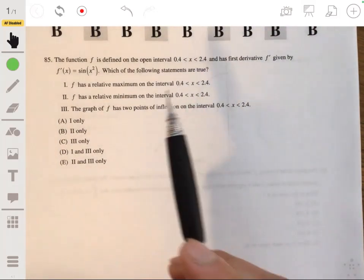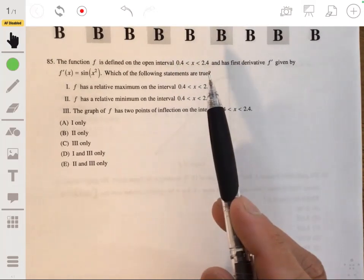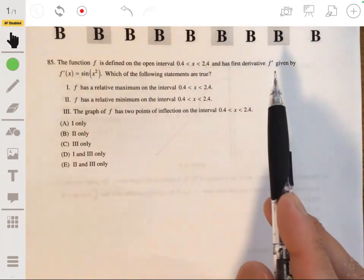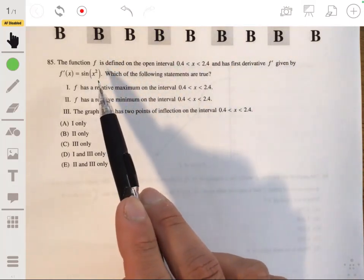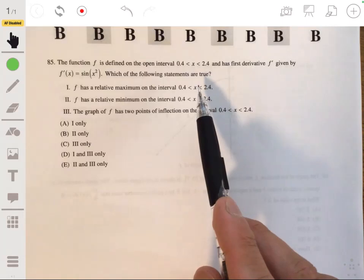Alright, 85. The function f is defined on the open interval from 0.4 to 2.4 and has first derivative f prime given by f prime of x equals sine of x squared. Which of the following statements are true?